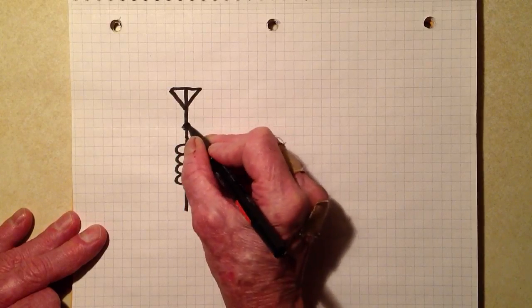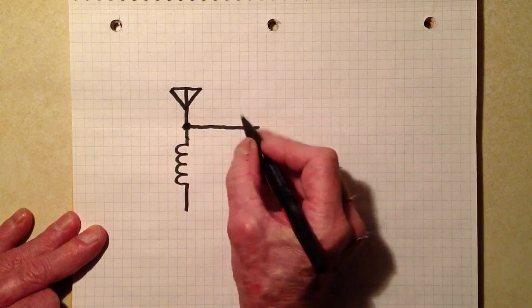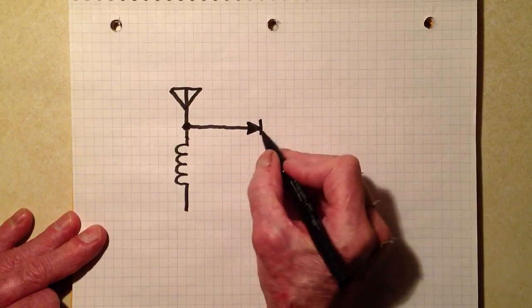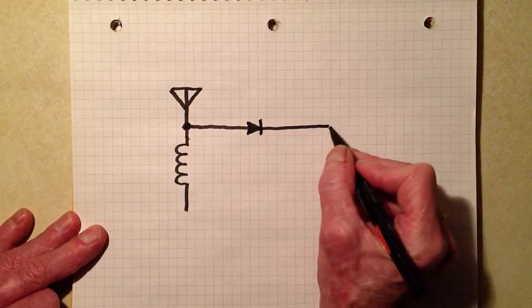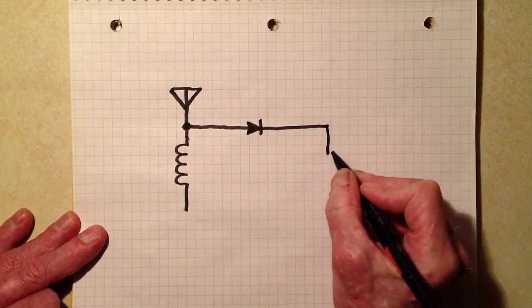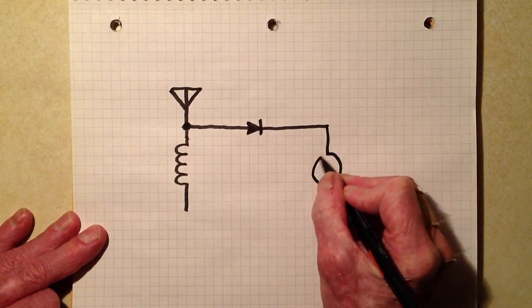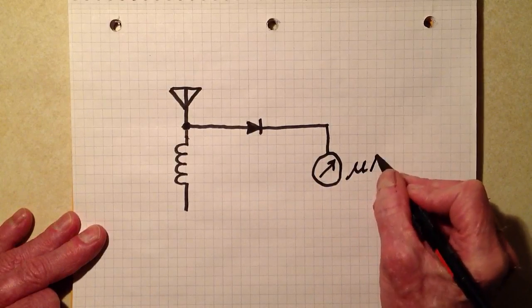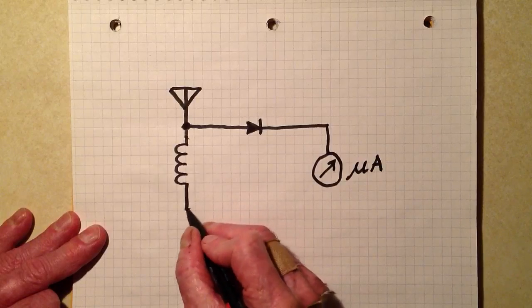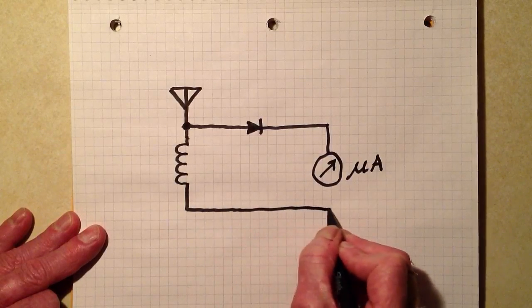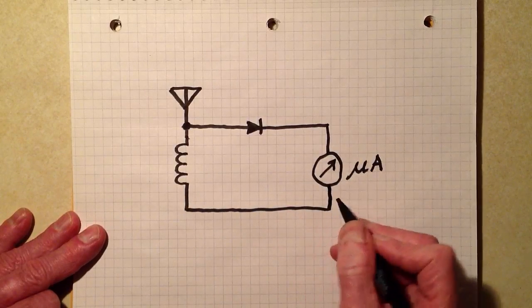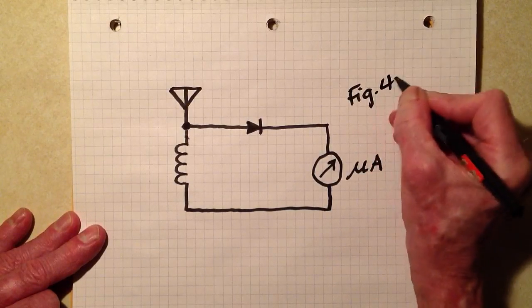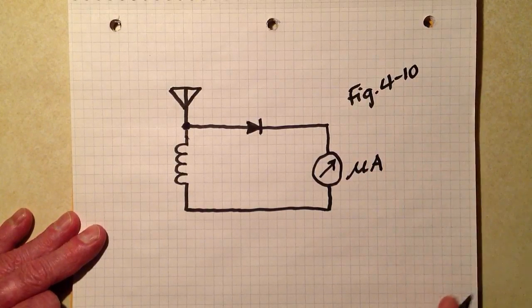Anyway, you have a semiconductor diode like this. Then you have a microammeter, and that is symbolized by writing the little Greek letter mu, then an uppercase A, microammeter. This is figure 4-10 on page 63.